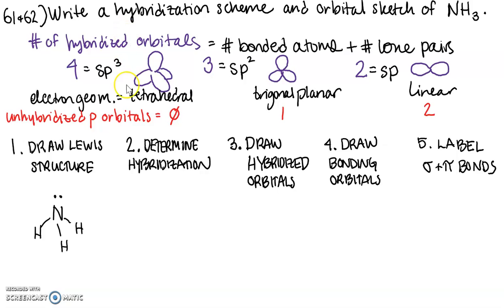So for us in this example there's one lone pair and one, two, three bonds, so four overall hybridized orbitals, which means it's going to be sp3 hybridized. The nitrogen will be sp3 hybridized. So we'll write that here. That's our hybridization scheme.